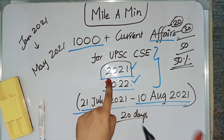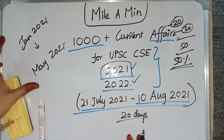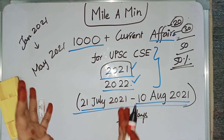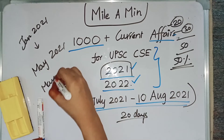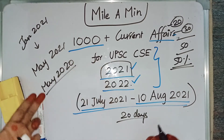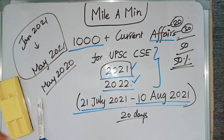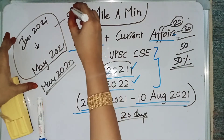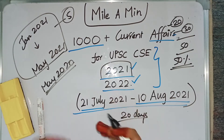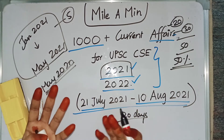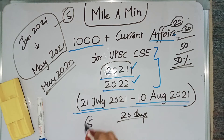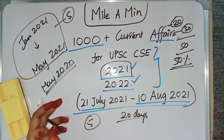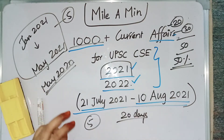This current affairs is very important for UPSC civil service aspirants 2021 who are going to take the exams in 2021, because this is recently in the news, so it has the highest importance compared to May 2020 current affairs. First let us cover these five months, and after completing them let us go backwards and cover October, November, December current affairs. We can see around 1000 plus current affairs in this five-month coverage.